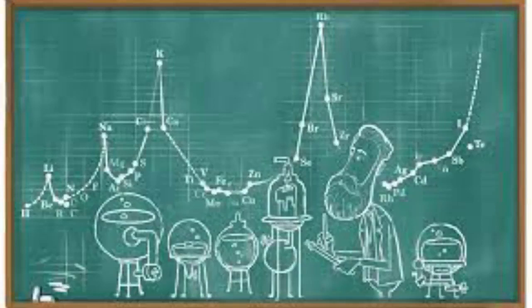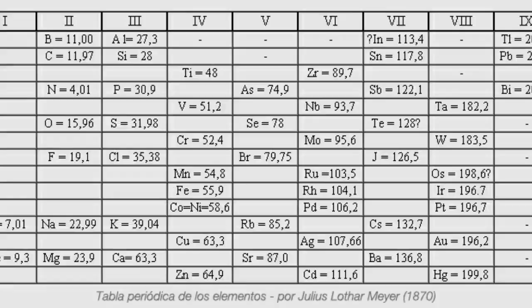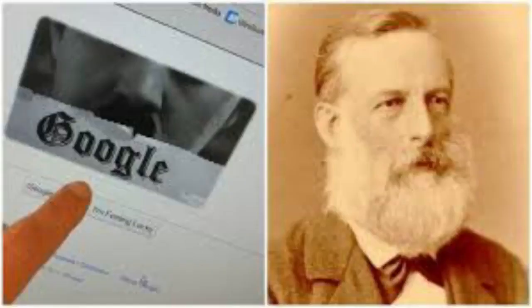Lothar Meyer was born in Varel, Germany, then part of the Duchy of Oldenburg. He was the son of Friedrich August Meyer, a physician, and Anna Biermann. After attending the Altace Gymnasium in Oldenburg, he studied medicine at the University of Zurich in 1851.